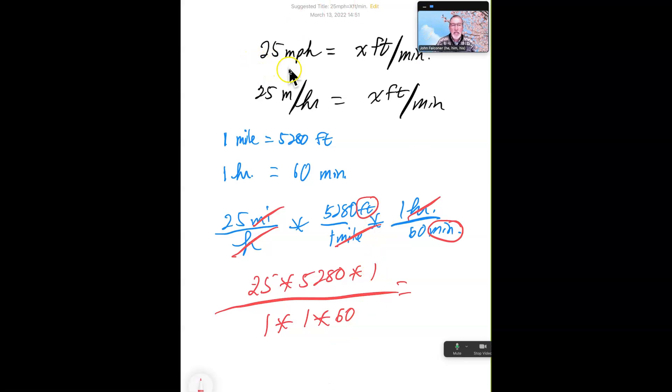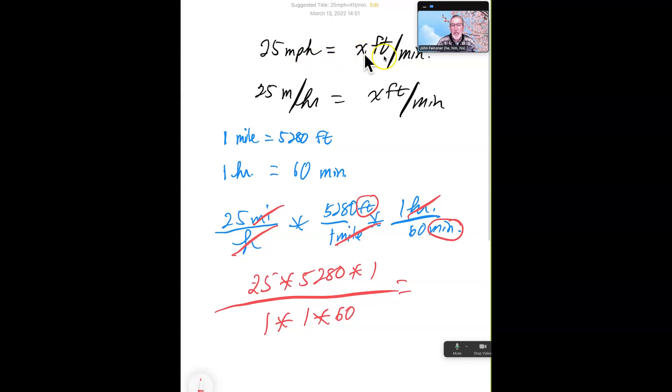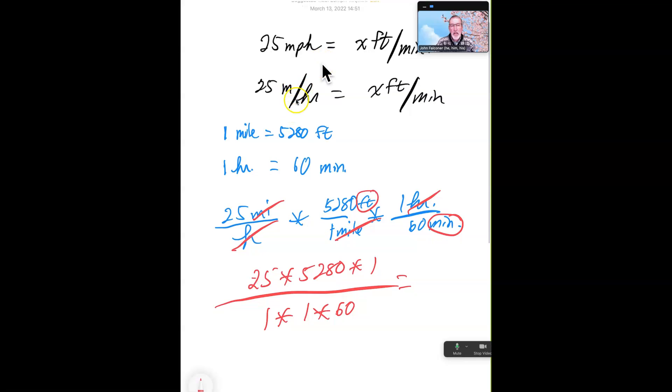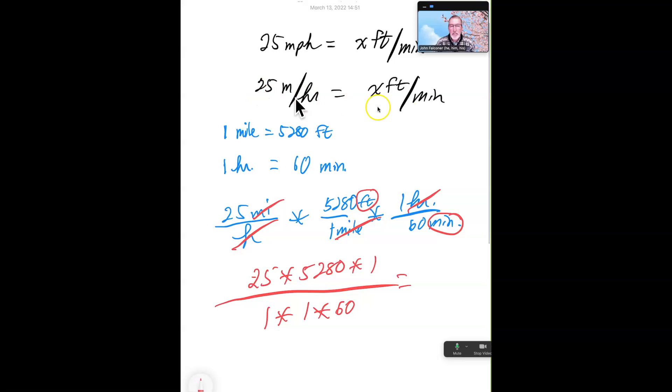So we've got, I'm setting it up this way, 25 miles per hour, 25 MPH. That's equal to X feet per minute. And we're going to rewrite this MPH as miles per hour. So we've got our two fractions here. And these are basically equivalent.